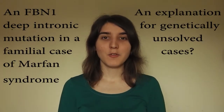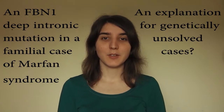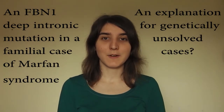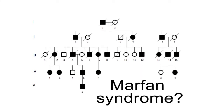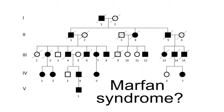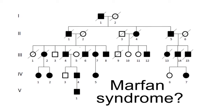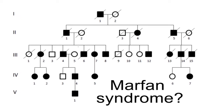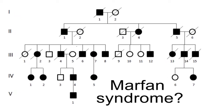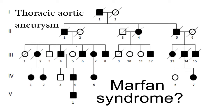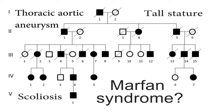In this video I will explain more about the deep intronic mutation causing Marfan syndrome. Years ago a large family came to clinic showing symptoms closely related to Marfan syndrome, an autosomal dominant connective tissue disorder. The family presented with skeletal and cardiovascular features, including thoracic aortic aneurysm, tall stature and scoliosis.